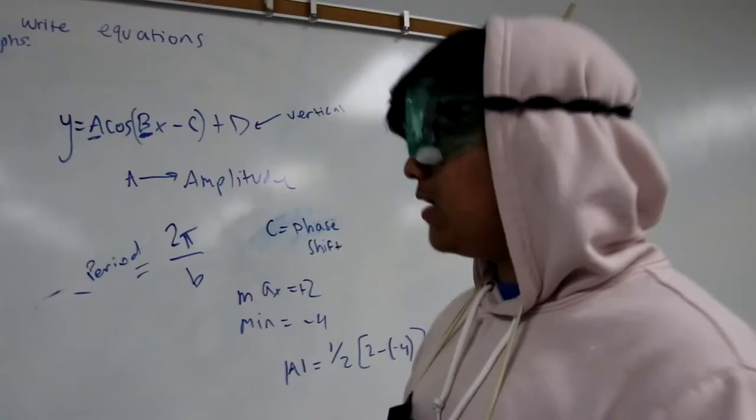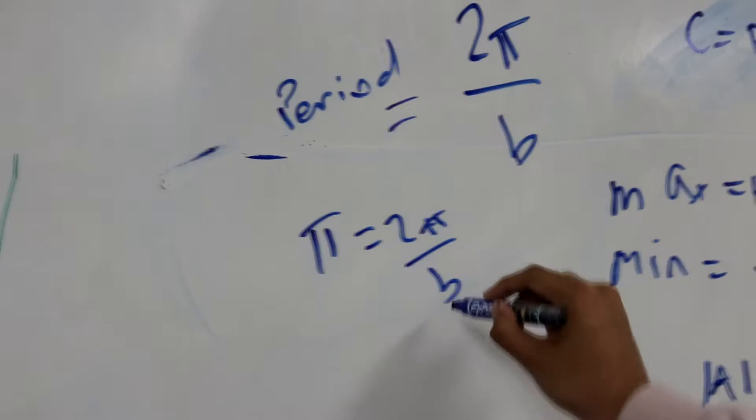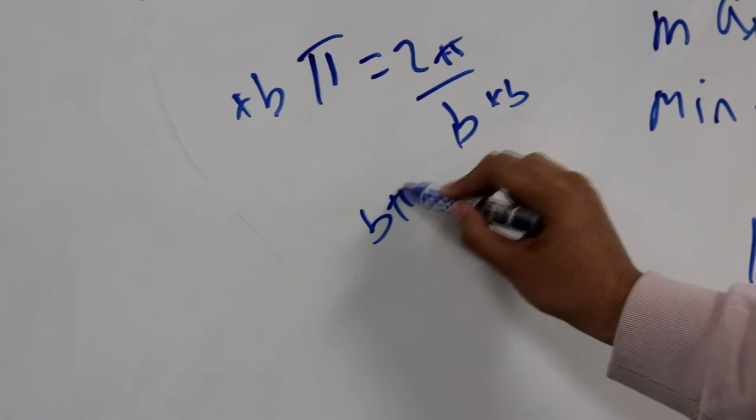So the period from this graph is actually pi. So that would be the period of this graph. And if you plug that in, pi is equal to 2π over b. And you can just multiply this b, so times b and times b, and then you're going to get b times pi is equal to 2π. And you can just divide the pi's. And b is then equal to 2. Wow, I didn't know I'd get this far.